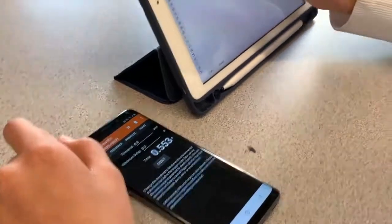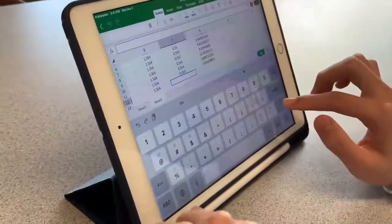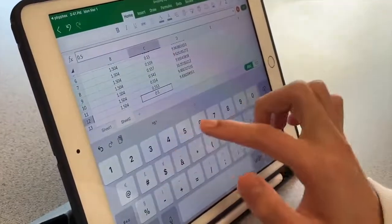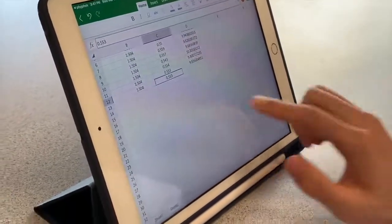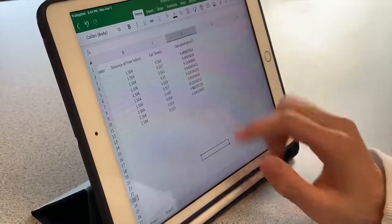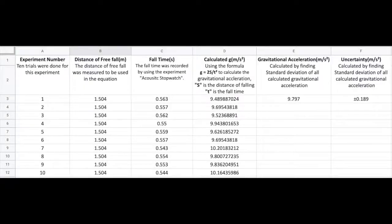Repeat the same procedure to complete 10 trials of the experiment. Record the data collected in the spreadsheet, and calculate the uncertainty using standard deviation. As a result, the gravitational acceleration we get is 9.797 plus or minus 0.189.